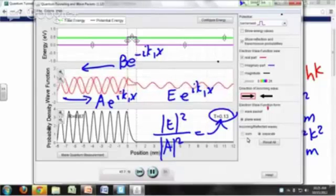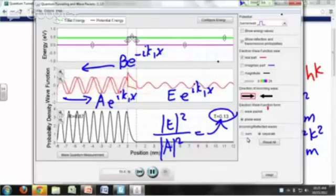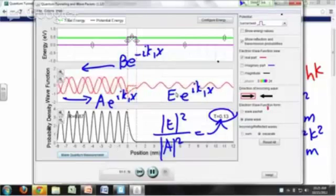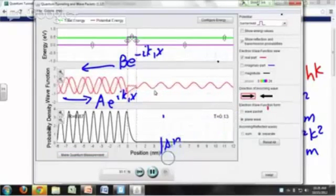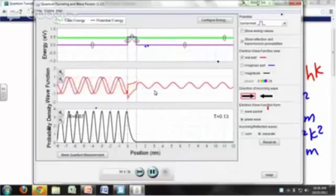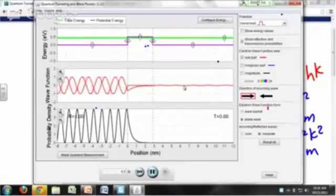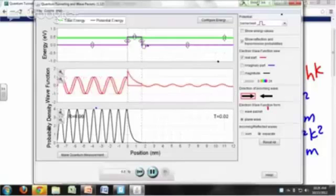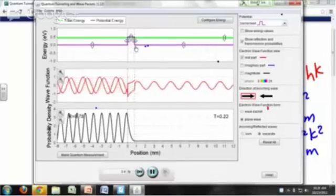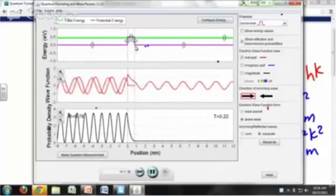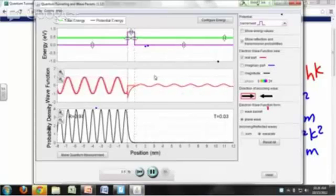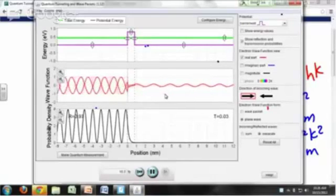So what would happen if we were to widen our barrier? The amplitude goes down, the amplitude right of the barrier is going to go down. There's less tendency for transmission to the barrier. If I make it smaller, greater transmission probability. I raise the barrier height, what happens? Transmission probability goes down.